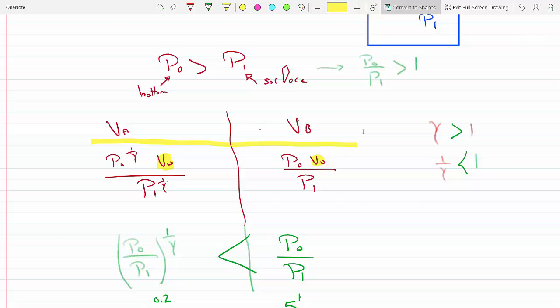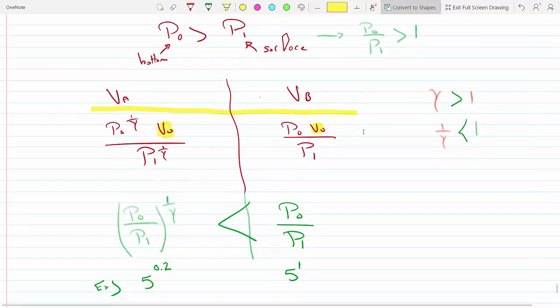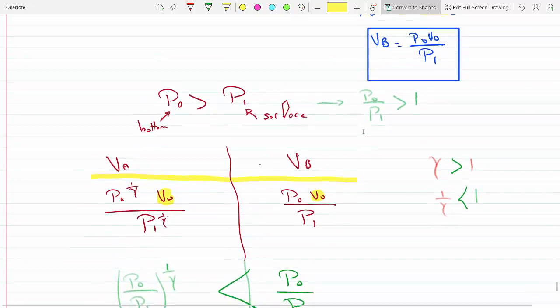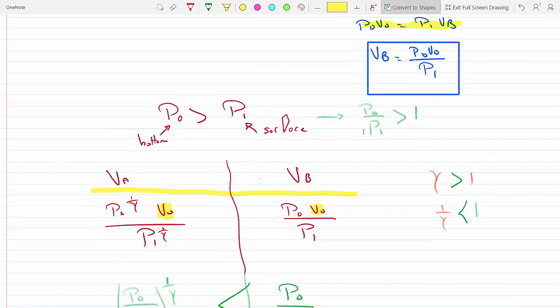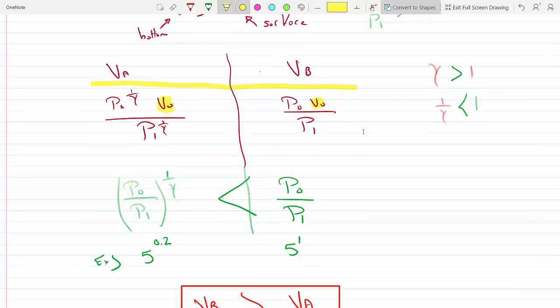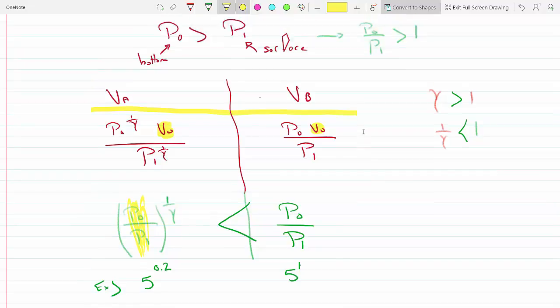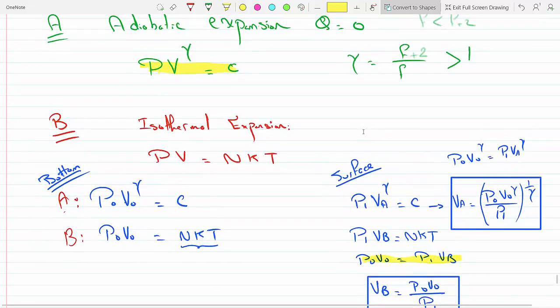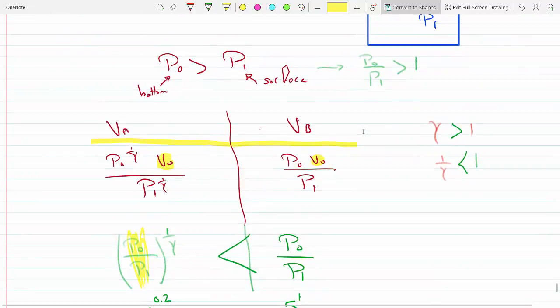For V A, P zero over P one to one over gamma. Now we know that the pressure at the bottom is much larger than the pressure at the surface, so this ratio here is greater than one. We already said that gamma is greater than one, so one over gamma will be less than one.